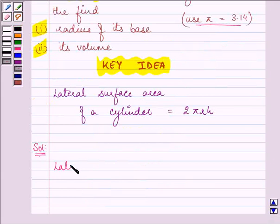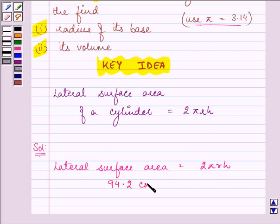Now we are given that the lateral surface area is equal to 2πrh. The lateral surface area is given to us as 94.2 cm². So this implies 94.2 cm² = 2π times r times h.